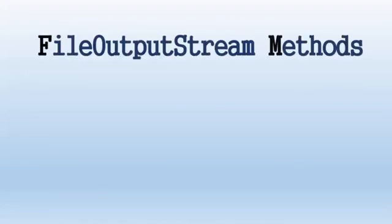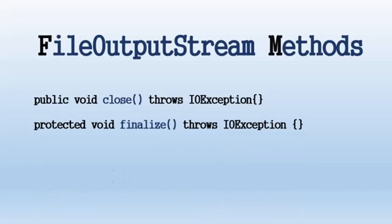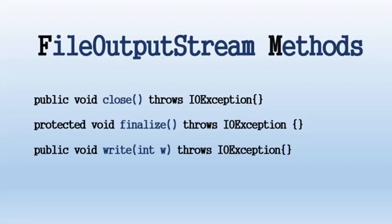FileOutputStream methods: the following are useful methods that can be used to write or perform operations on the stream. The close method closes the FileOutputStream and releases any system resources associated with the file. The finalize method cleans up the connection to the file and ensures that the close method is called when there are no more references to this stream. The write method writes a specific byte to the output stream. Another write method writes a given length of bytes from a byte array to the output stream.